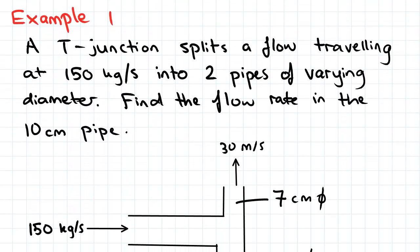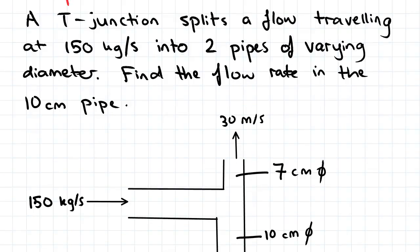Here's our example: a T-junction splits a flow traveling at 150 kilograms per second into two pipes of varying diameter. Find the flow rate in the 10 centimeter pipe.